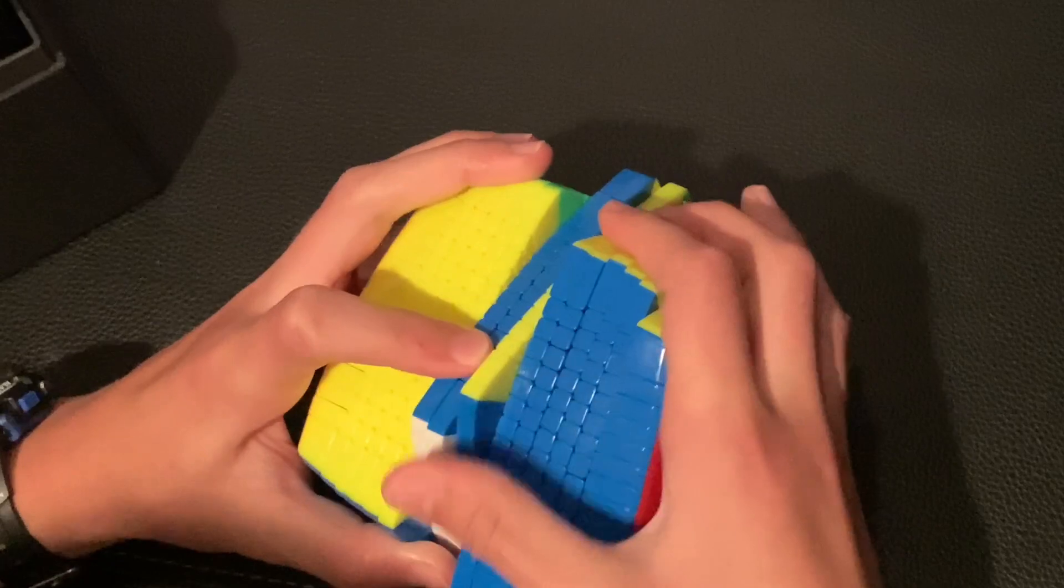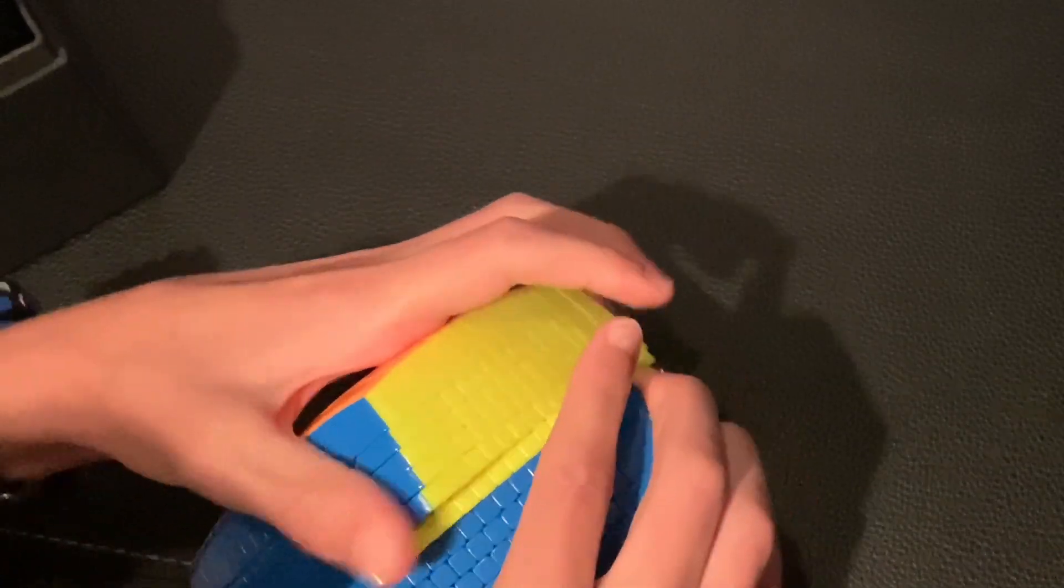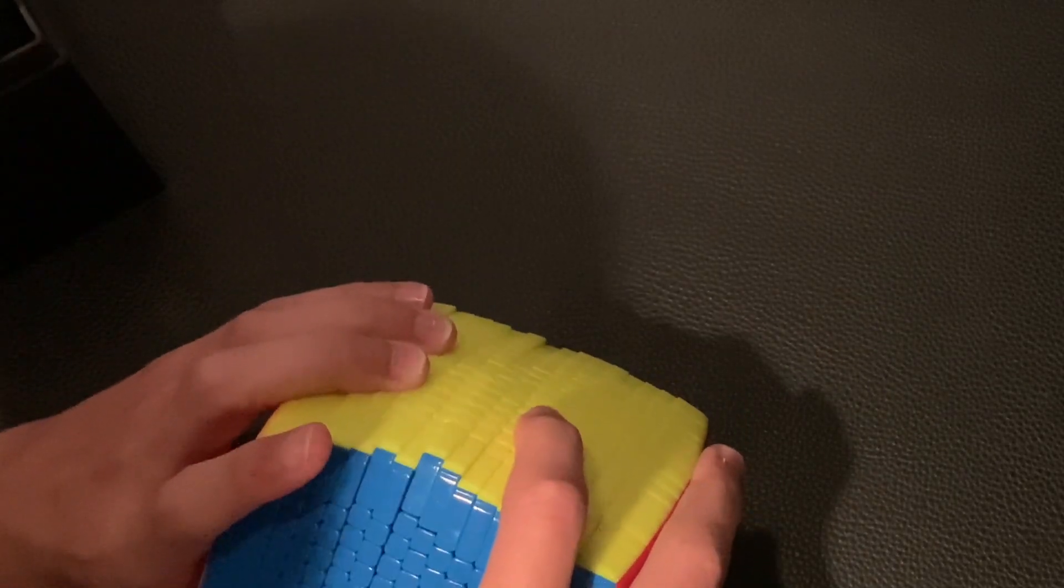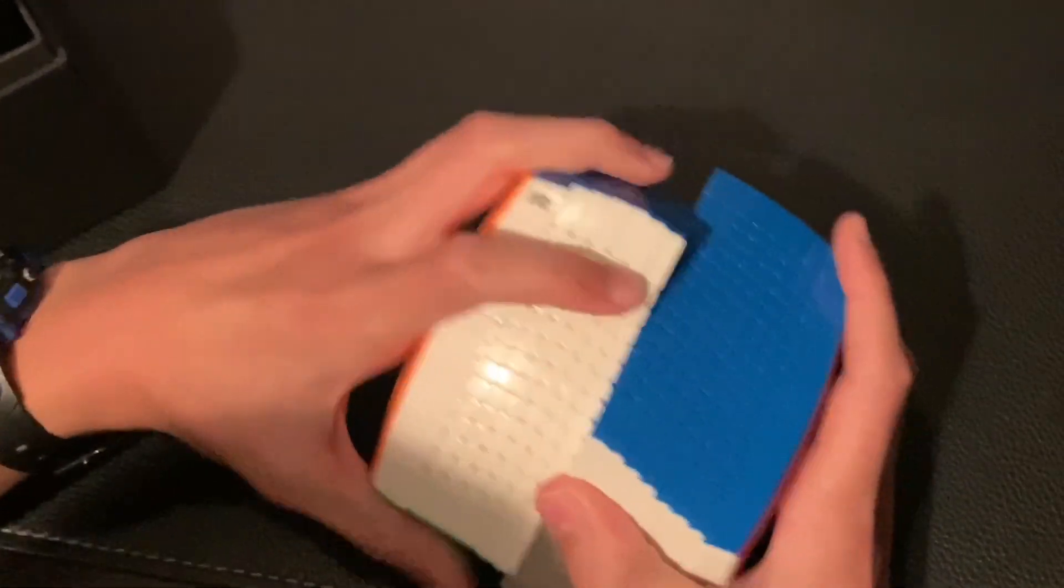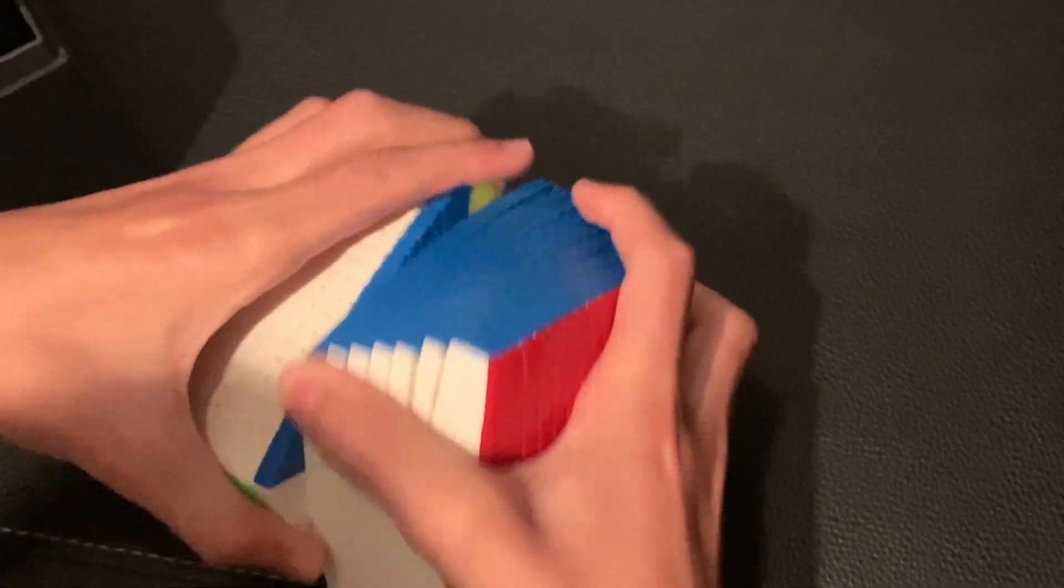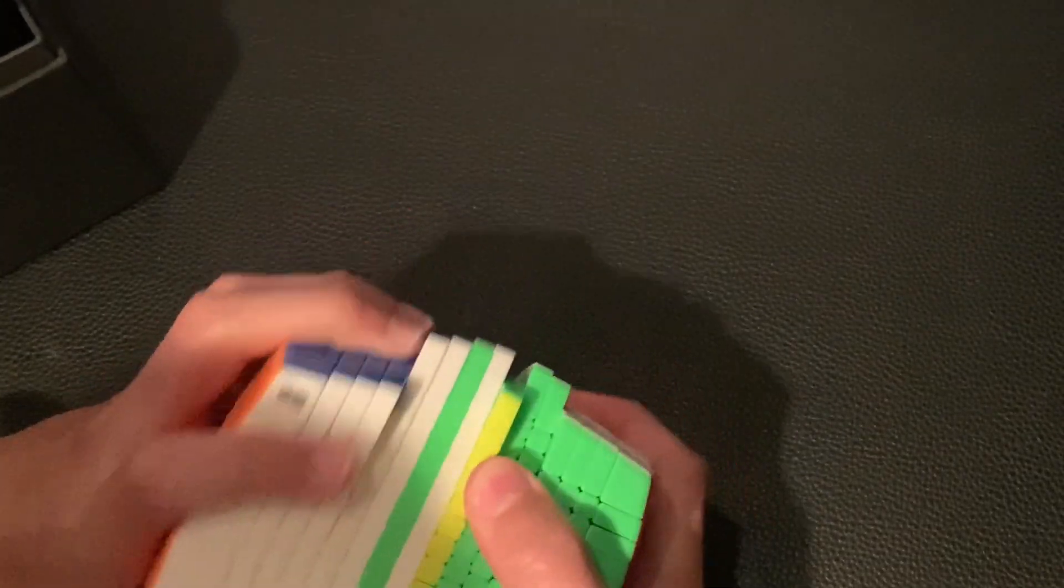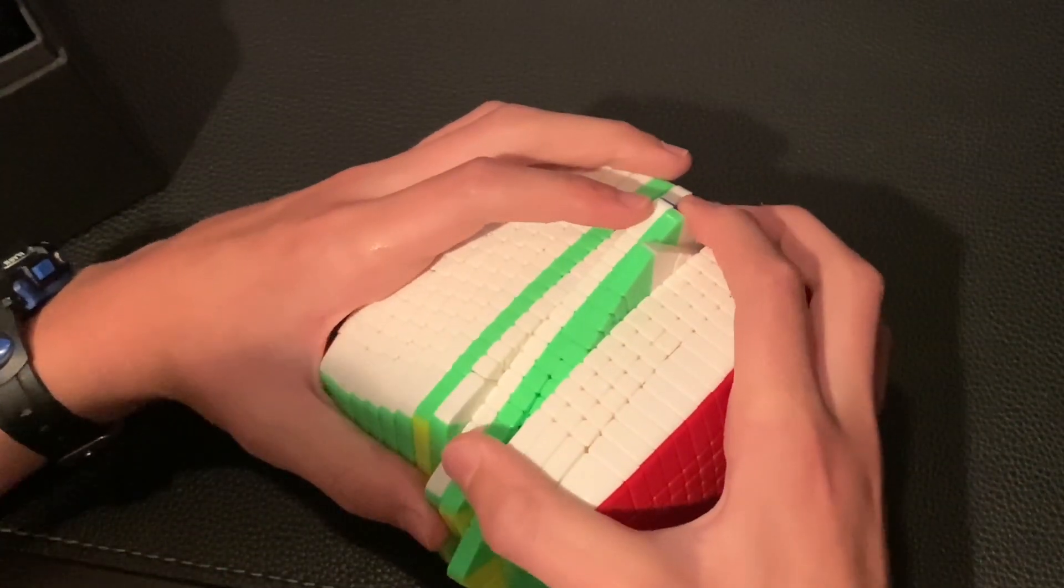Oops. Because this thing is very small. It's not as loose. If I can find a way to loosen it, I probably will. It doesn't look like I can pop any center caps. But I'll find a way to loosen it. Yeah, this thing can do slice moves pretty well. It's a very nice cube. I'm really excited for when I can solve it sometime.